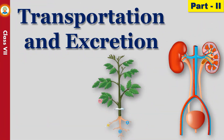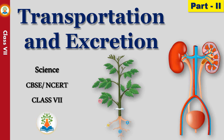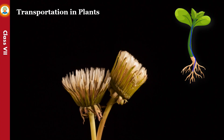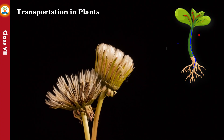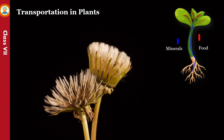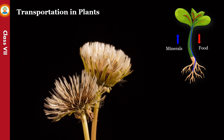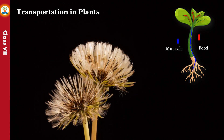Hello friends. In the first part we learned about transportation of substances in humans. In this video we will learn about transportation in plants and excretion. For photosynthesis, plants need water and other raw materials. They absorb water from soil through roots.